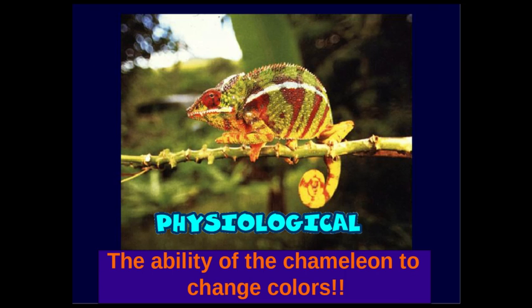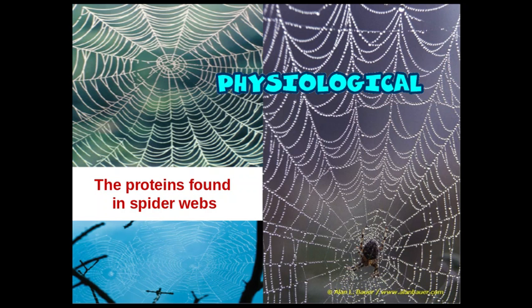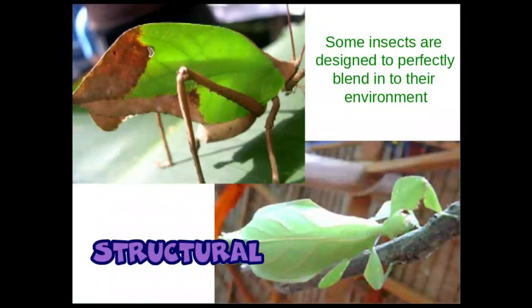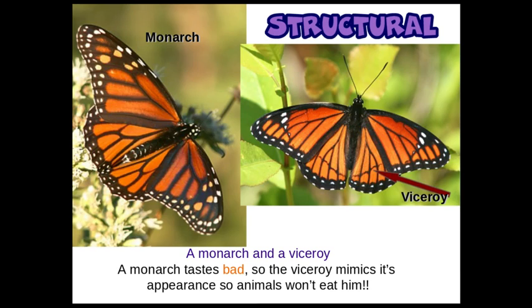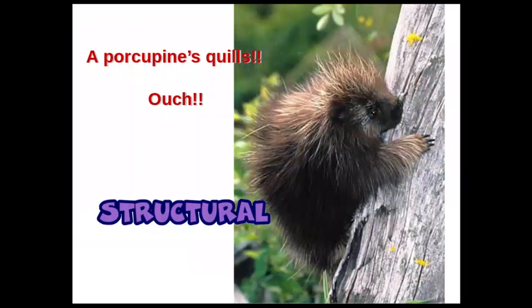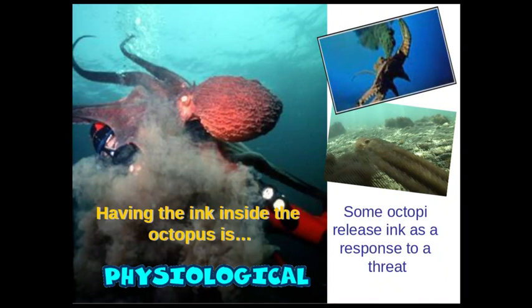Flying — that's structural; they have wings. The ability to change colors — that's chemistry, that's your body doing something physiological. It's behavioral and physiological really — you're doing it to blend in, but it's physiological that your body's doing it. Remember the protein in the spider's webs. Mimicry — looking like a leaf — that is structural. Migration is also an example. A quill is a defense thing. The ink that the octopus makes — that's physiological.